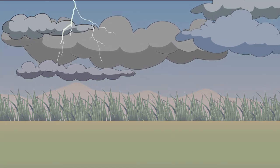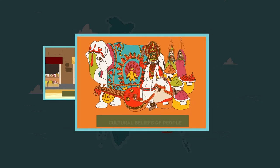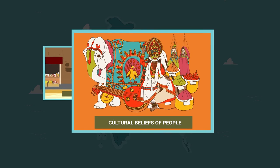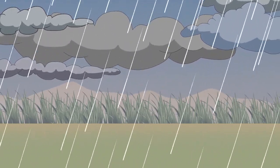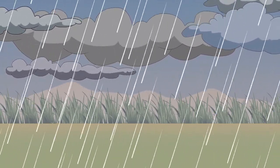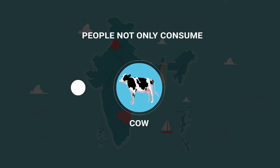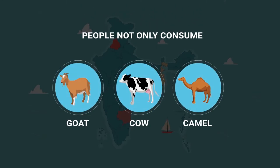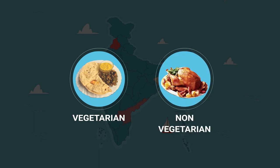What are the factors which affect the kind of food eaten in a region? It depends on the weather of that region, the availability of ingredients, and the cultural beliefs of the people. Weather determines what kind of food crops can be grown. Based on availability, people consume milk not only from cows and goats but even camels.